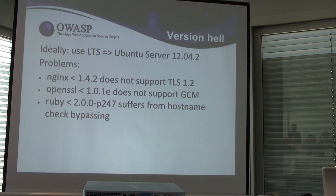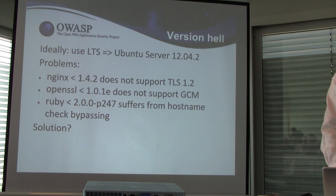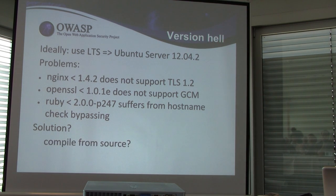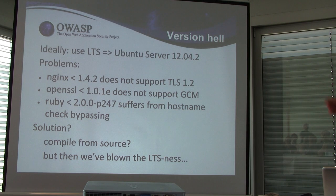OpenSSL available for Ubuntu doesn't support GCM — and support for GCM turns out to be quite important. If you look at Ruby, below patch level 247 it suffers from hostname check bypassing. Being rather simple-minded, we thought we'd compile from source and install. But hang on — doesn't that mean we've blown all the warranties and supposed benefits of using an LTS version? Maybe there aren't any good solutions anyway.